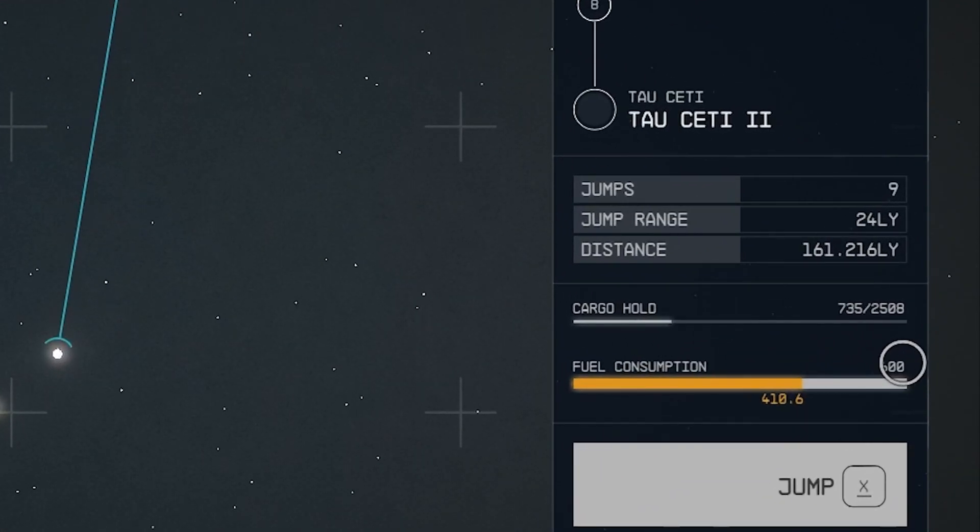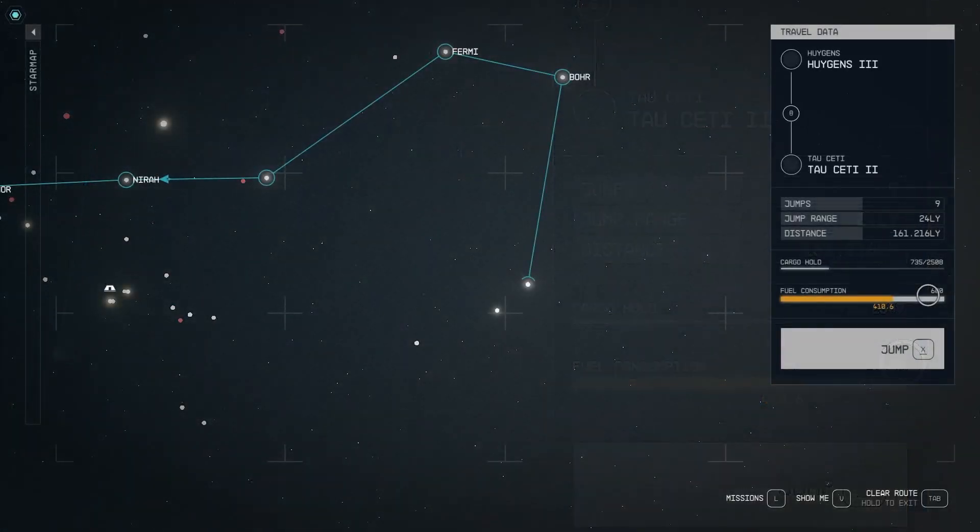Generally, having more fuel will allow you to travel much longer distances. However, having a larger jump range will actually shorten your trips, because the shortest route between two points is a straight line.